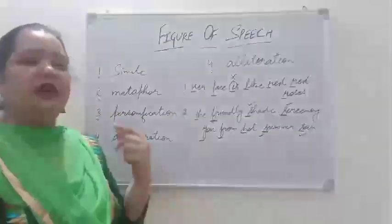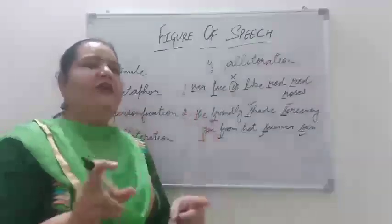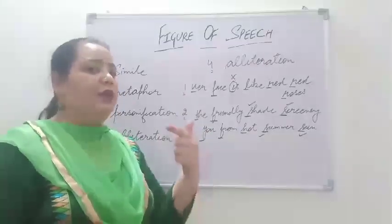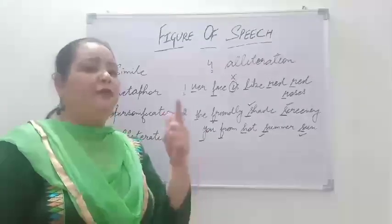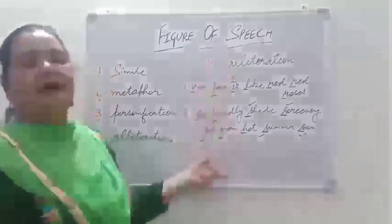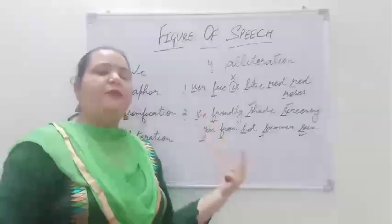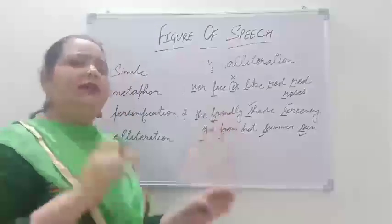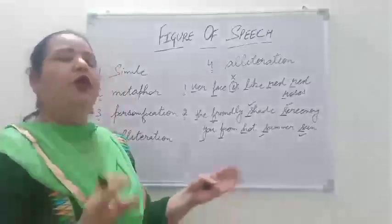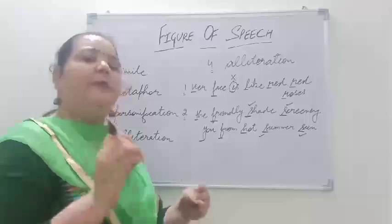Alliteration is very easy to find. You go every word, check the first letter, and find out whether it is a consonant sound or a vowel sound. If the same consonant sound repeats, it is alliteration. And one more thing: when you are asked which figure of speech is used, you just have to answer that it is alliteration.